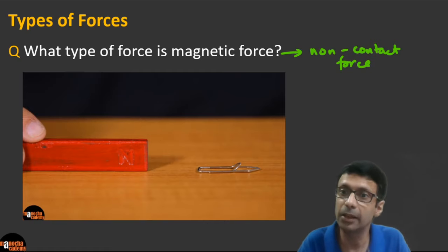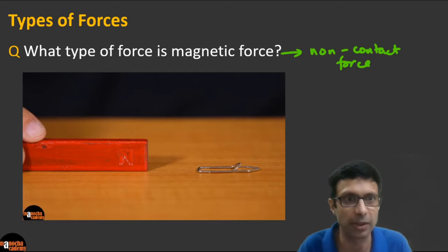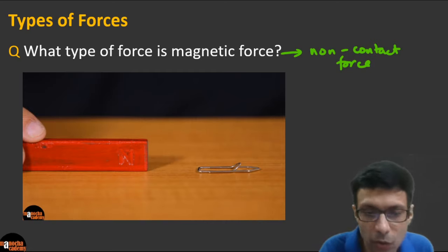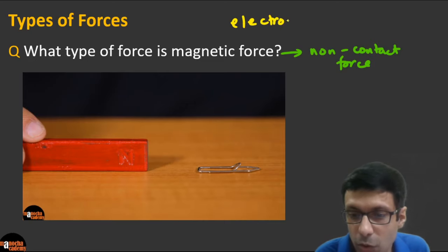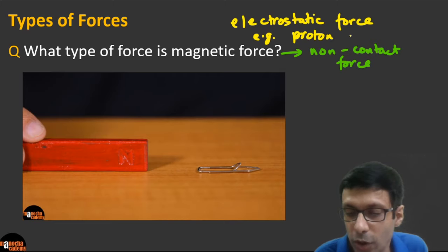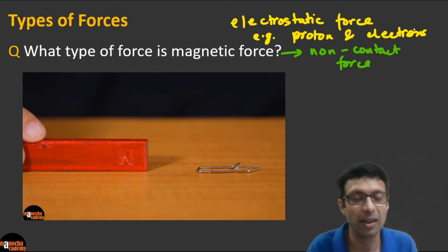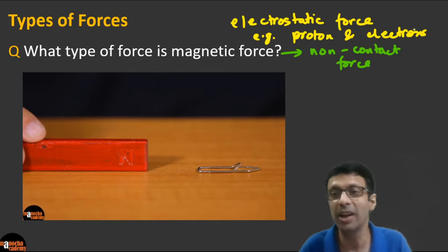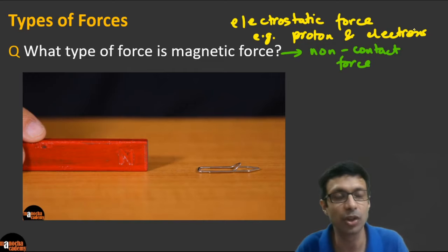Gravitational and magnetic forces are non-contact forces. Another example is electrostatic force — the force between charged particles — such as the force between the protons and electrons in an atom. Protons are positively charged and electrons are negatively charged; they attract each other even though the electrons are at a distance from the nucleus. So gravitational, magnetic, and electrostatic forces are good examples of non-contact or forces at a distance.